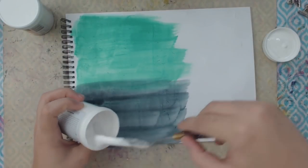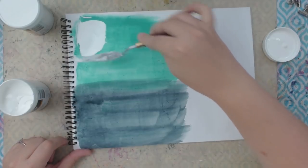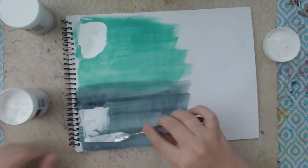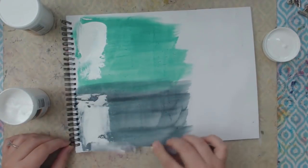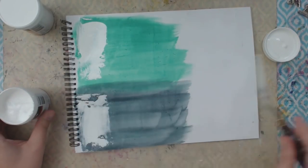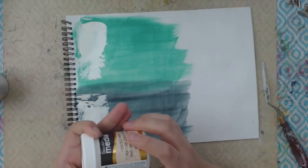So I'm gonna start with the Crackle Paste and I'm just gonna use my palette knife to spread it over the area that I want it. It says on the directions you can put this through a stencil or you can mix it with paint and we're gonna try the mixing it later in the video.